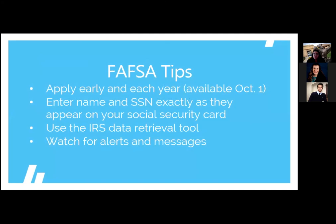One thing you always want to make sure is that you're entering your name and social security number exactly as they appear on your social security card. That may seem obvious, but mistakes happen. When I was filing the FAFSA for my undergraduate degree, my FAFSA kept getting rejected — it kept saying I was not who I said I was. It turned out my name was spelled wrong on my social security card, just one letter off, and I had to go get a new social security card before I could file. So filing early always helps you solve those issues.